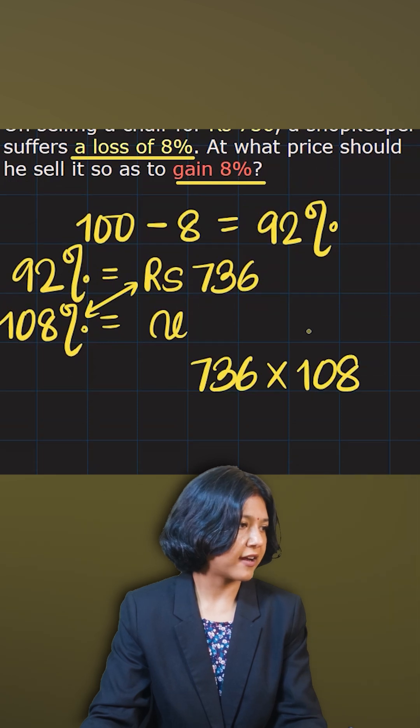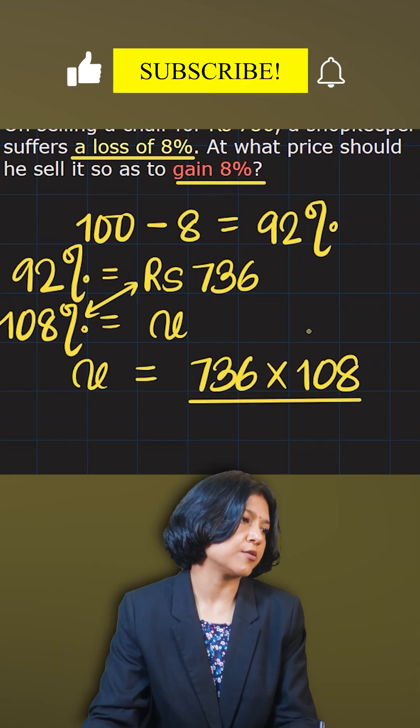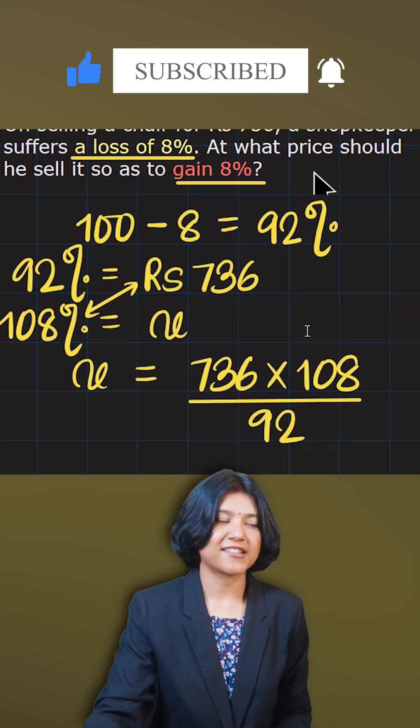736 times 108. You're finding for x. So x cross multiplies with 92, giving you eventually 92 at the bottom. And hence, this is something you can do now.